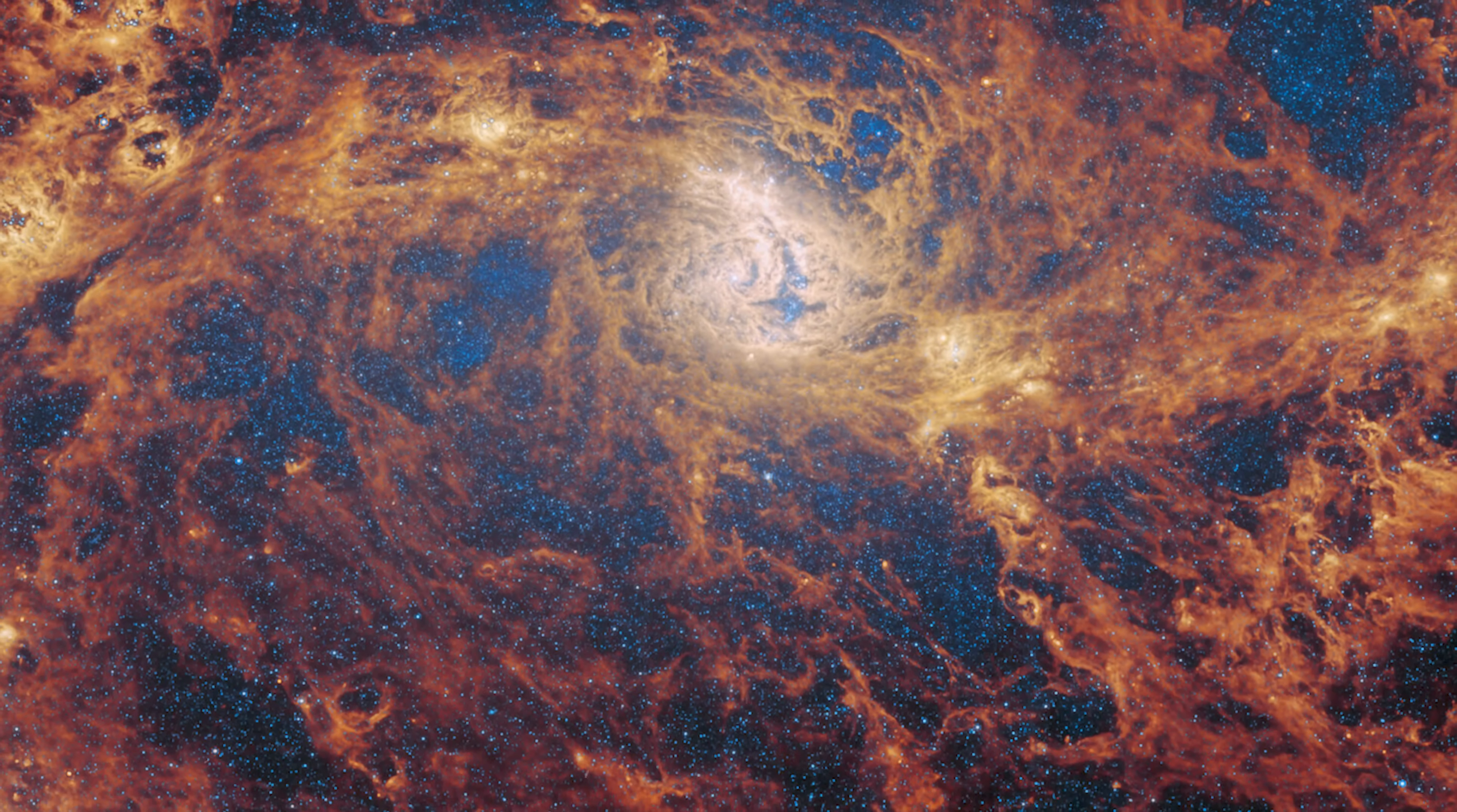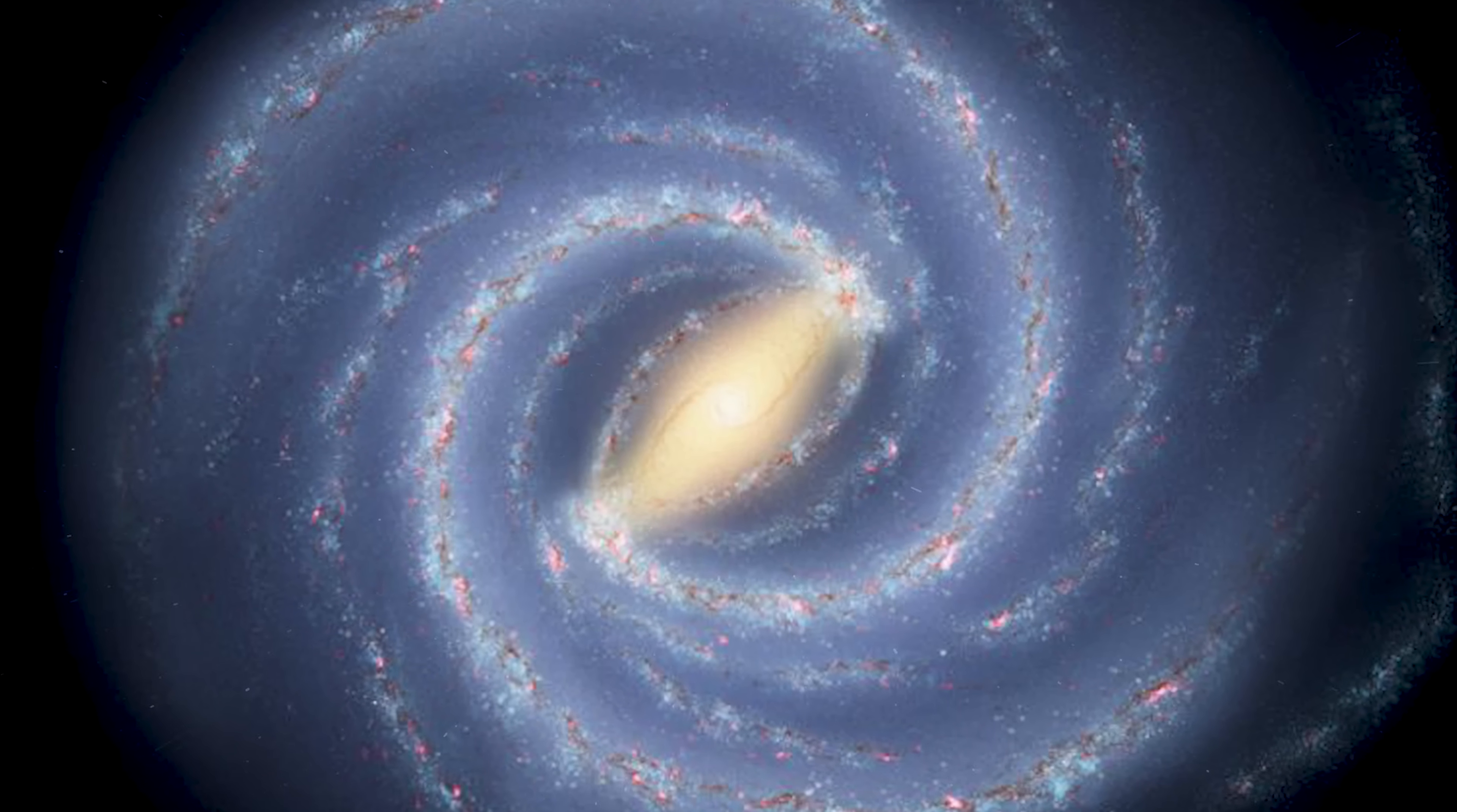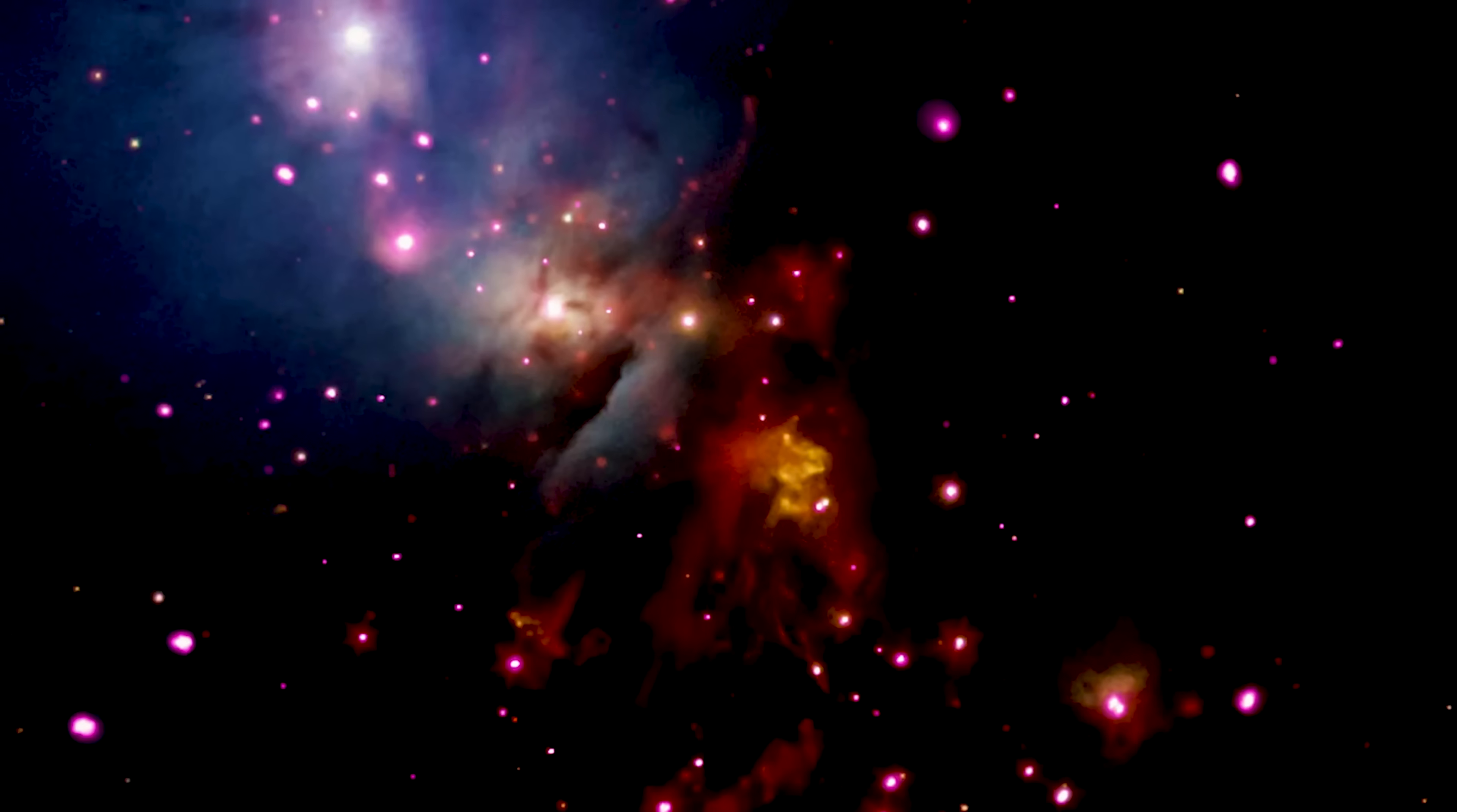Yet Webb's revelations extend to the evolution of galaxies themselves. Barred spirals like CIRS-2112 appear astonishingly mature even at an age when the universe was only about 2 billion years old. Their stellar mass, structure, and organization challenge everything we thought we knew. How could galaxies form so quickly? How could massive, well-ordered structures exist in an epoch supposedly dominated by chaotic growth?